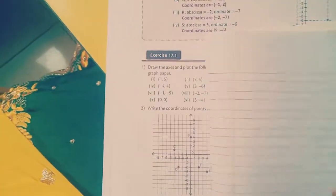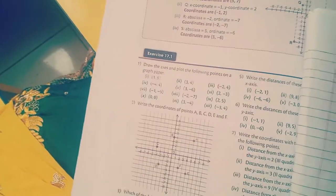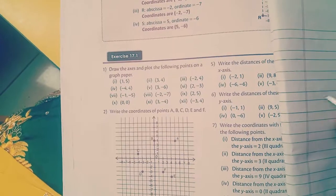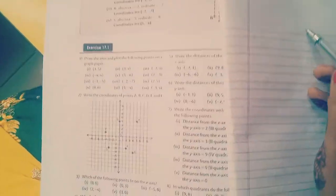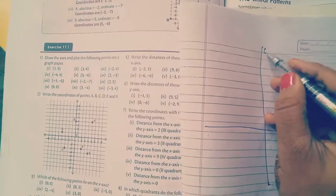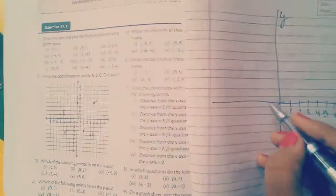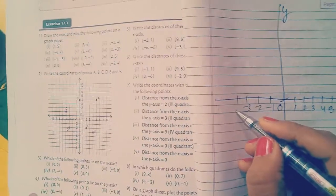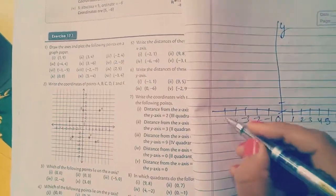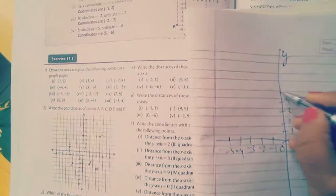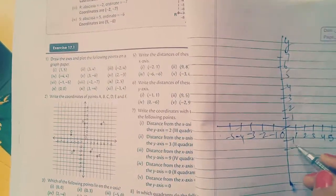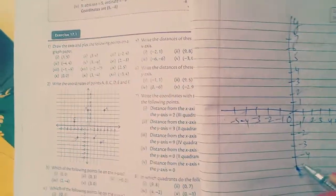We will do question number 1 only here. Draw the axis and plot the following points on a graph paper. You can also take graph paper from the market also, or you can draw on the notebook. So these are the axes, x-axis, y-axis. This one is O. Here, positive value of x. Then negative value of x on the left-hand side. Then here is positive value of y, then negative value of y.